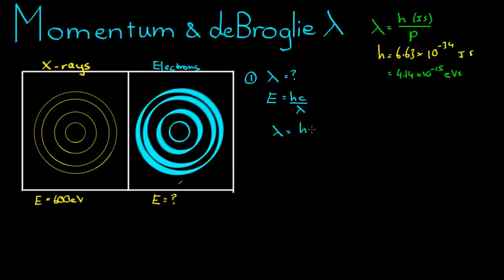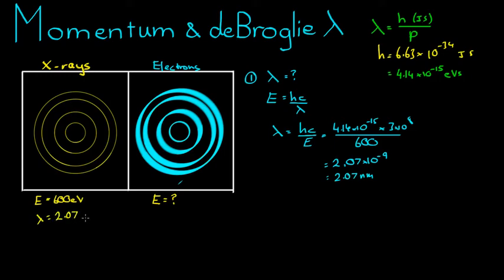So let's get wavelength by itself. Lambda equals H C over energy, which is equal to 4.14 times 10 to the negative 15, times 3 times 10 to the 8, divided by 600. I have that as 2.07 times 10 to the negative 9, or 2.07 nanometers. That is the wavelength of these x-rays. That must also be the wavelength of the electrons over here, 2.07 times 10 to the negative 9.